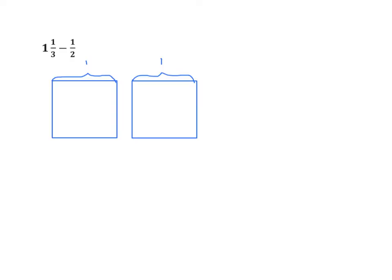We're going to look at this first example. We have 1 and 1 third minus 1 half. We're going to look at that minuend, 1 and 1 third. We're going to leave the left rectangle whole to represent the 1, and then I'm going to represent 1 third by partitioning the second rectangle into three equal parts. We'll now bracket 1 and 1 third.